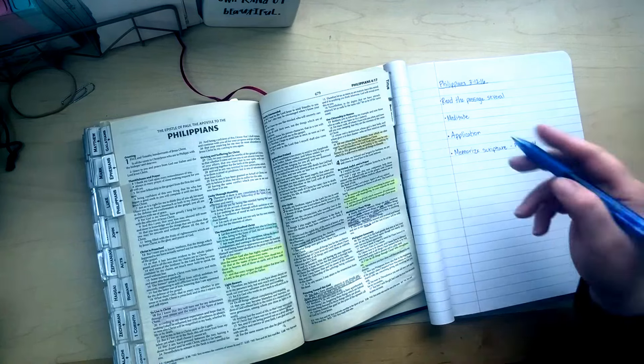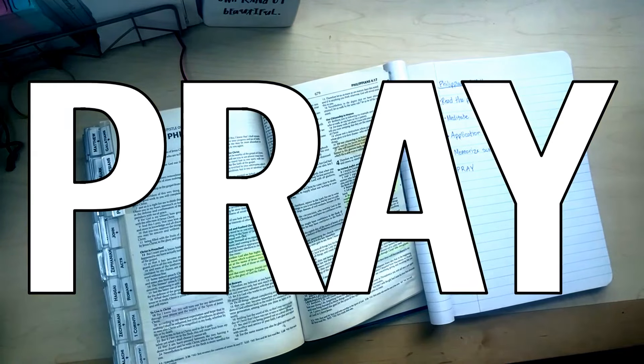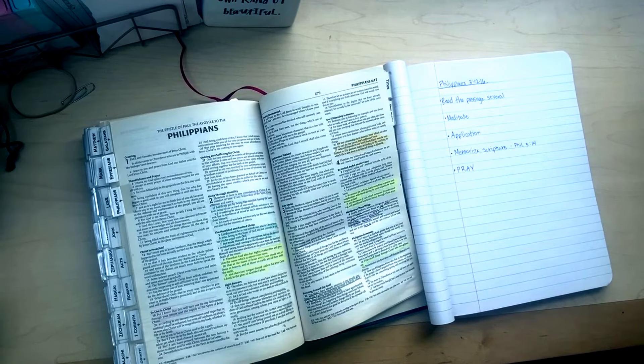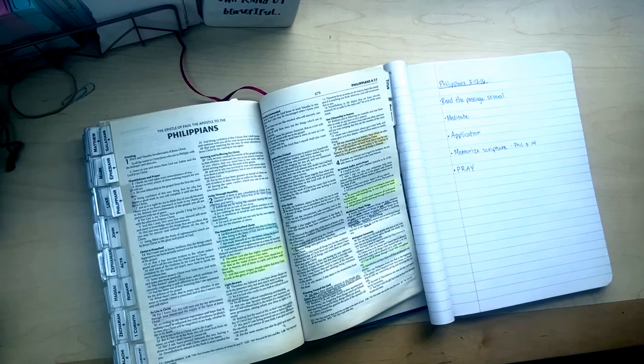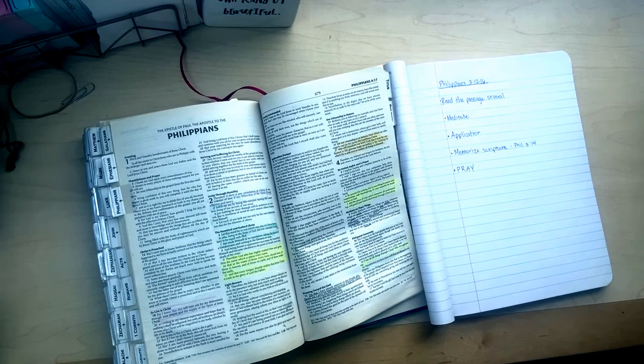And after you have done all of that, the last part is to pray. Pray and ask God how to practically apply this scripture to your life, how to practically walk out what you have read and what you have understood, the revelation that you have received from this, how to practically apply that to your life. Ask God for his help, for his wisdom, for his strength. Again, we always begin with prayer and we end with prayer.